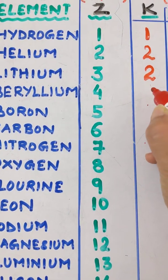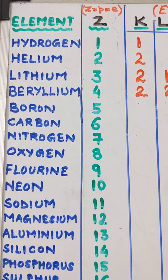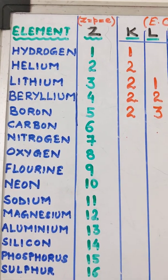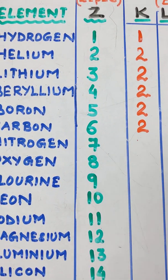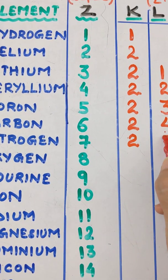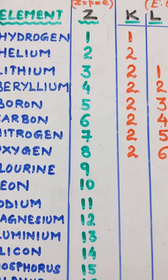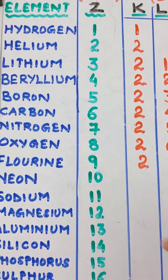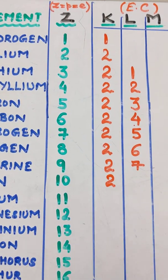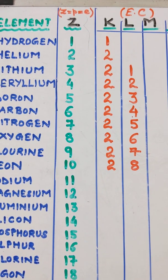Boron has an atomic number of 5: 2 electrons in K shell, remaining 3 in L shell. Carbon, atomic number 6: 2 in K, 4 in L. Nitrogen, atomic number 7: 2 in K, 5 in L. Oxygen, atomic number 8: 2 in K, 6 in L. Fluorine, atomic number 9: 2 in K, 7 in L. Neon has atomic number 10: 2 in K and 8 in L — this is the maximum capacity of the L shell, and neon is the first element with 8 electrons in its L shell.